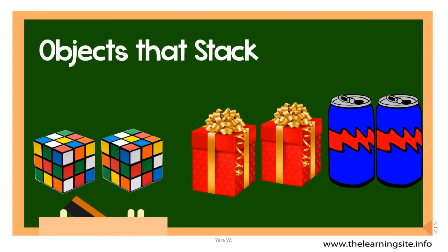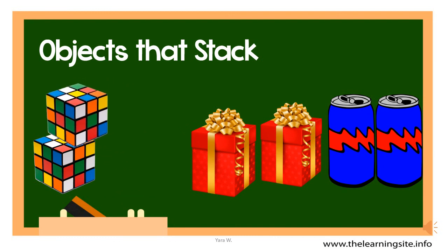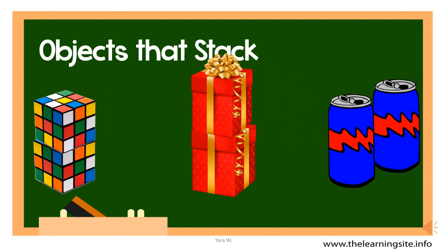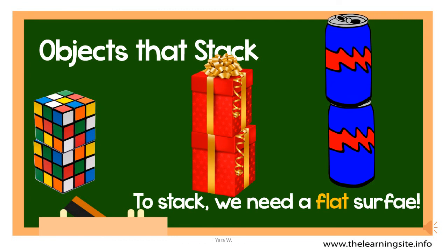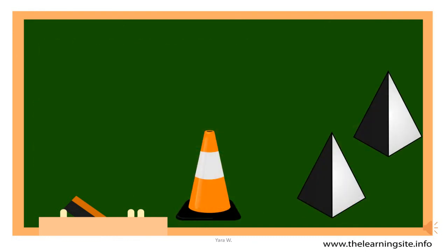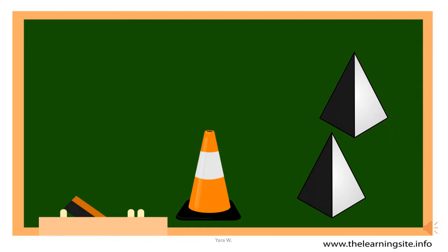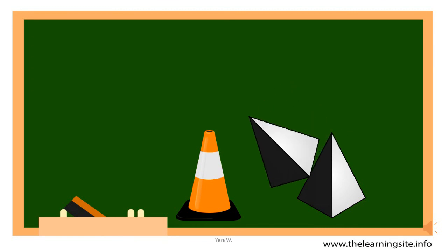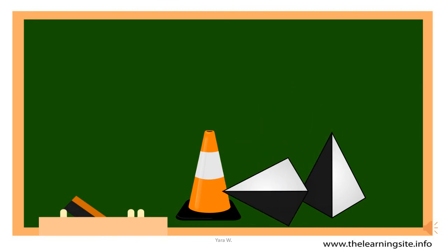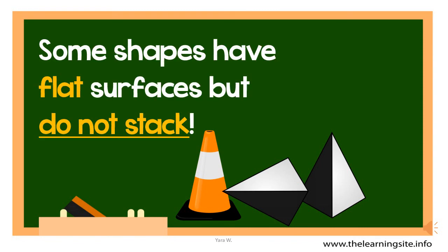Stacking is a different idea — it is being able to place more than one object over each other. To do that, you will obviously need a flat surface. But do all flat surfaces stack? Let's try to stack these objects. The pyramid is made of all flat surfaces — let's try to stack it. It won't happen. Same thing with the cone: it has a flat bottom surface, but you can't place two cones over each other.